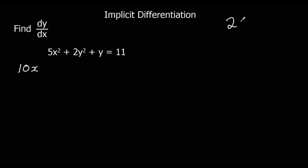For 2y squared, we can think of this as the chain rule. We've got a bracket — we differentiate around the bracket, so multiply by the power and take 1 off the power. Then we times by the bracket differentiated, and y differentiated is dy/dx.